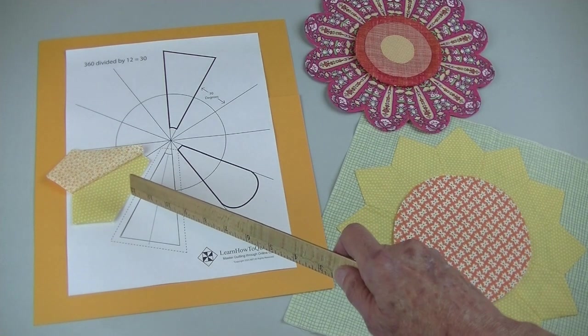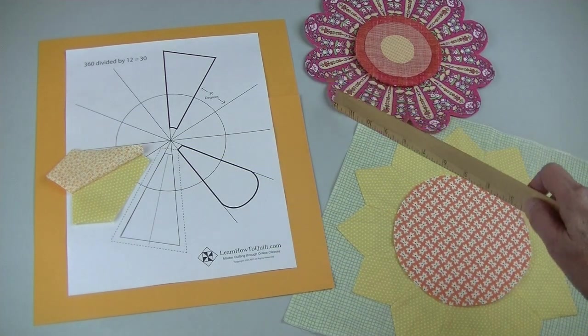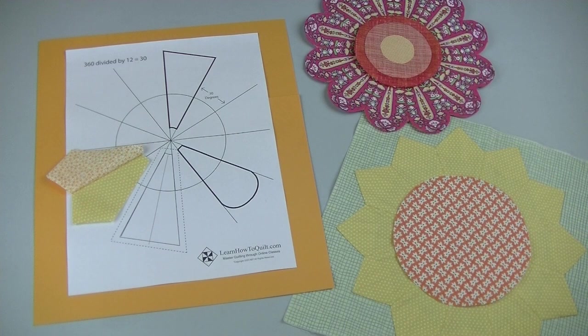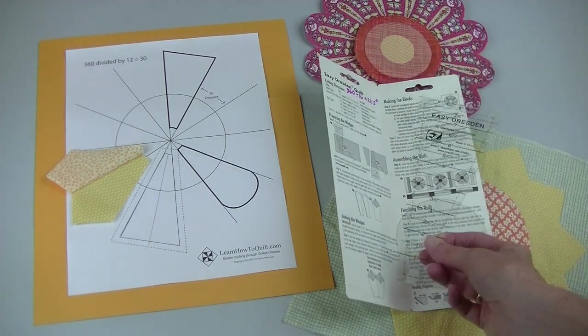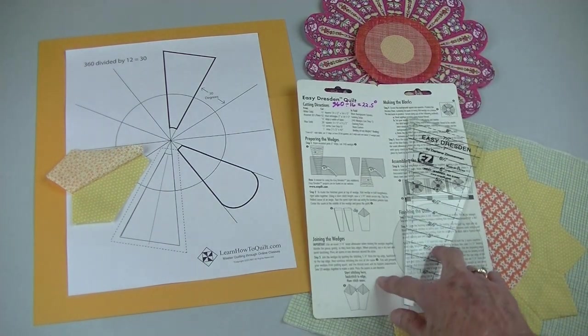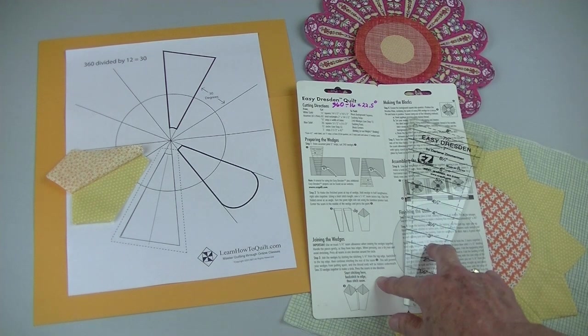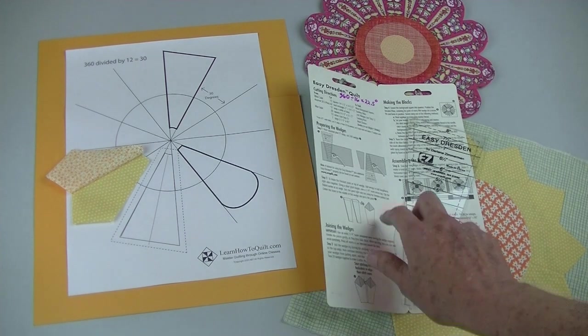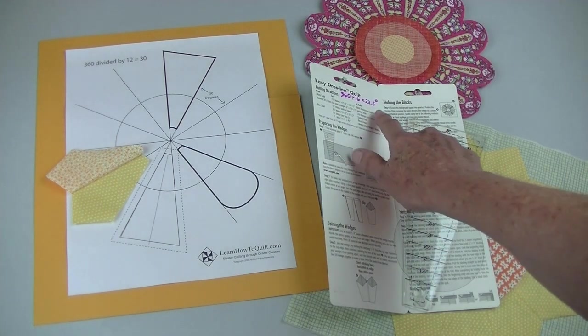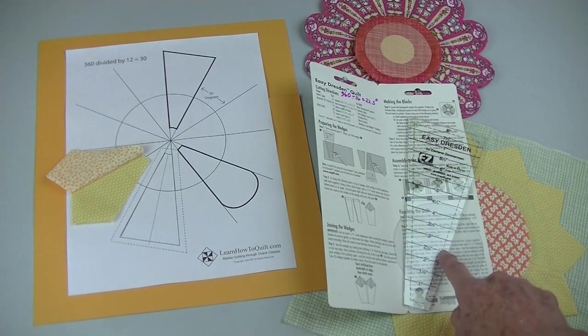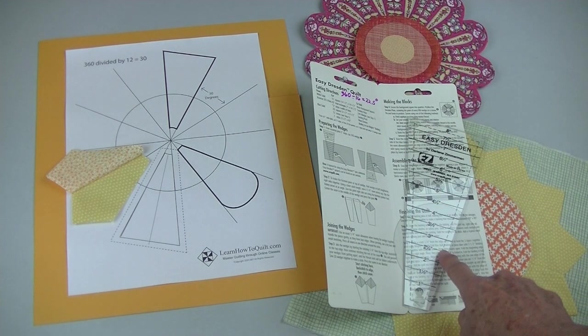First you'll work on these pointed petals. Then you'll learn how to add a curve to the petals. Before I forget, you can purchase Dresden rulers. This one happens to be for a 16 wedge Dresden Plate. If I divide 360 by 16 I'll see that the angle on this is 22 and a half degrees.